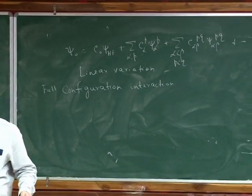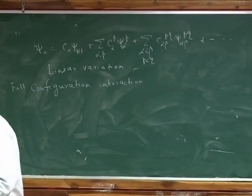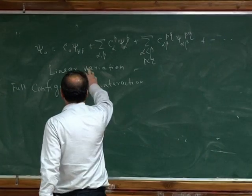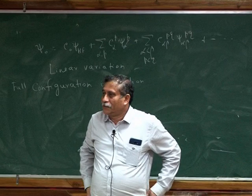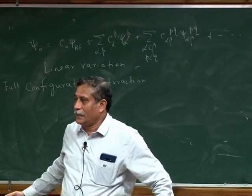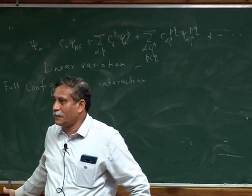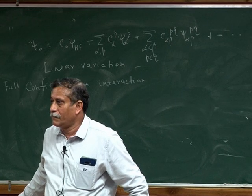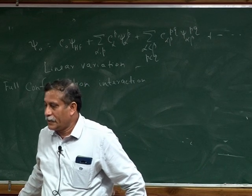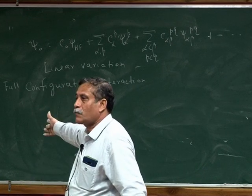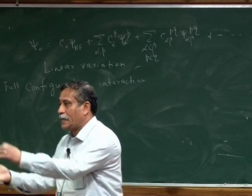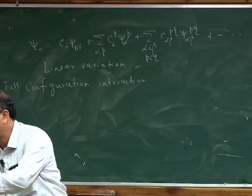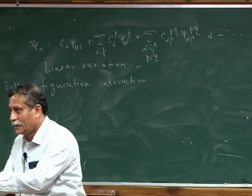Why should it improve the answer? Because I am taking more number of terms. If I have only Hartree-Fock, whatever will be the value, if I take both terms, it will improve. That's the variation method. Because the perturbation theory, you could actually see that the energy would be lower. Yes, because it's a variation method, so energy, the upper bound principle will still be there. So the result will improve, but it will never go below E0.